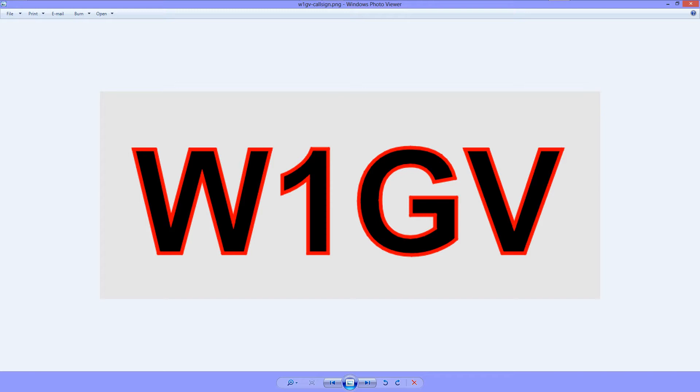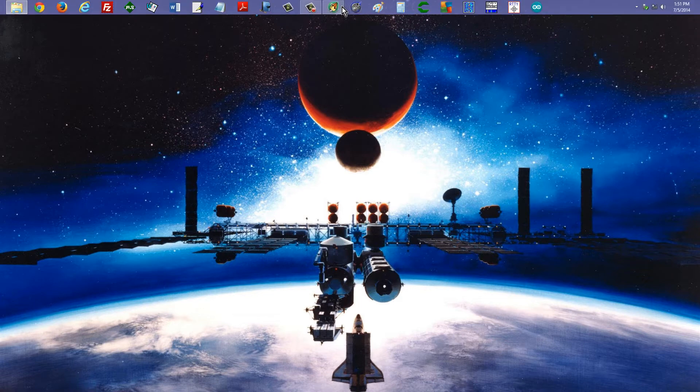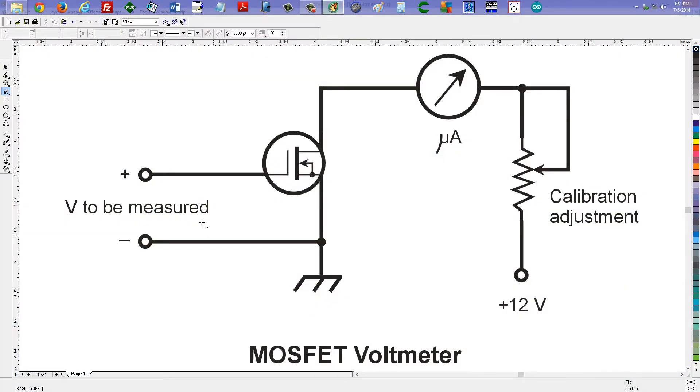To talk a little bit about a device called a MOSFET voltmeter. Very simple way to get a voltmeter to work without drawing any current from the source.